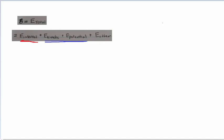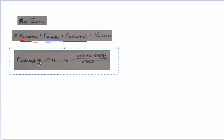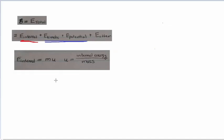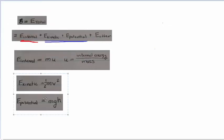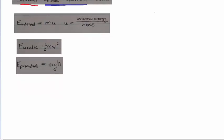The way we're going to write the internal energy is M times U, where U is specific energy — energy per unit mass — and we multiply by M to get just energy. Similarly, the kinetic term is the familiar half M V squared, and the potential energy from gravity is just M·g·h.